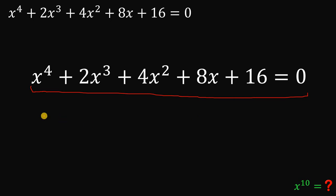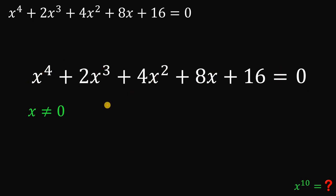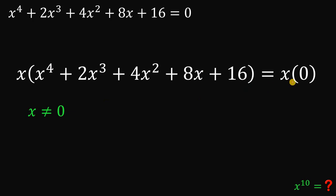Our approach: take the given equation x raised to the fourth power plus 2x cubed plus 4x squared plus 8x plus 16 equals 0. Take note that x is not equal to 0, because if we let all x be equal to 0, every term becomes 0, including the constant 16 — but that would make 16 equal to 0, which is a contradiction. So x is not equal to 0. Why is this important? Because what we're going to do is multiply both sides by x.